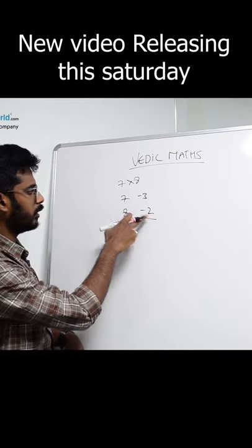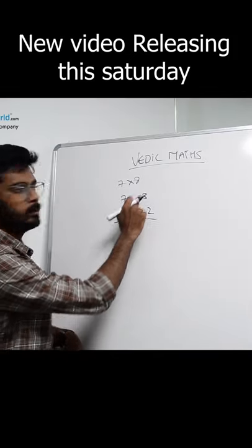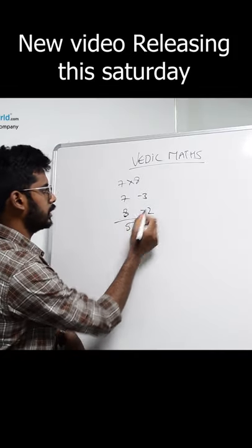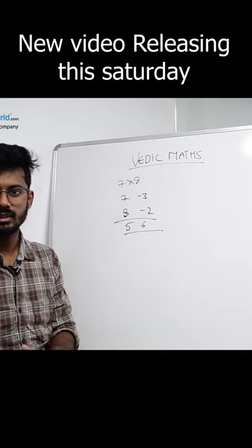So here if you see, 7 minus 2 is also 5 and 8 minus 3 is also 5. 3 into 2 is 6. So this is so easy.